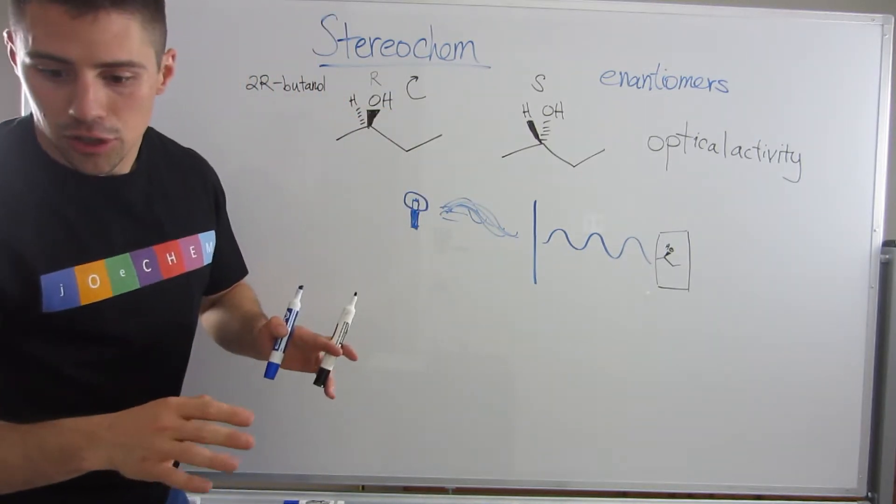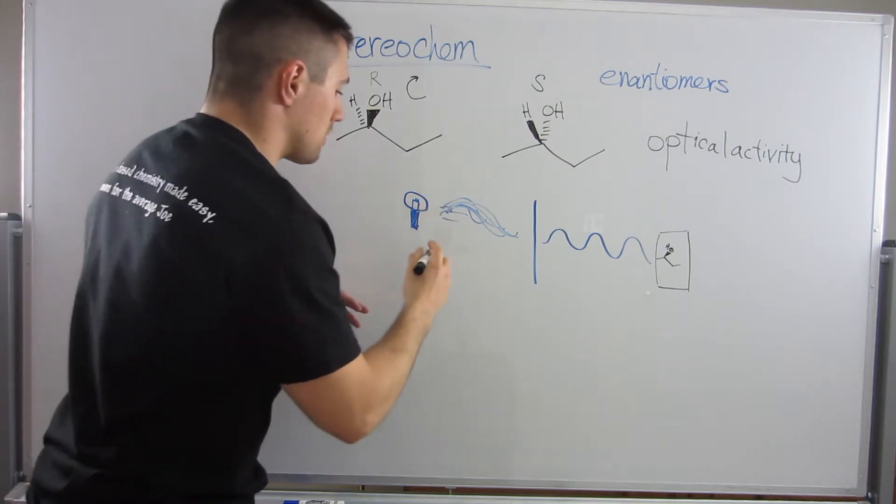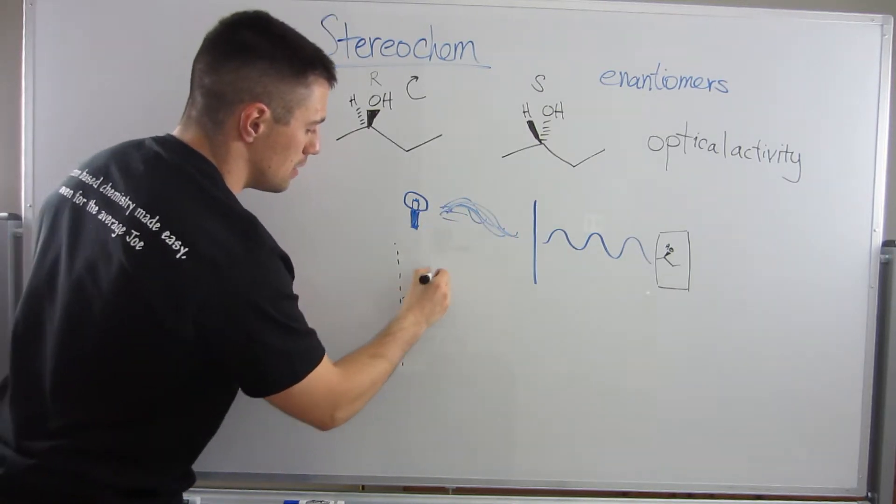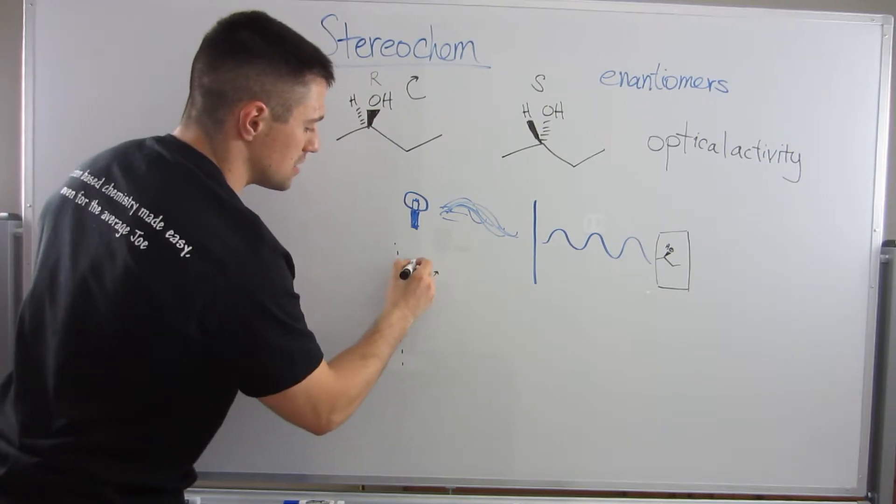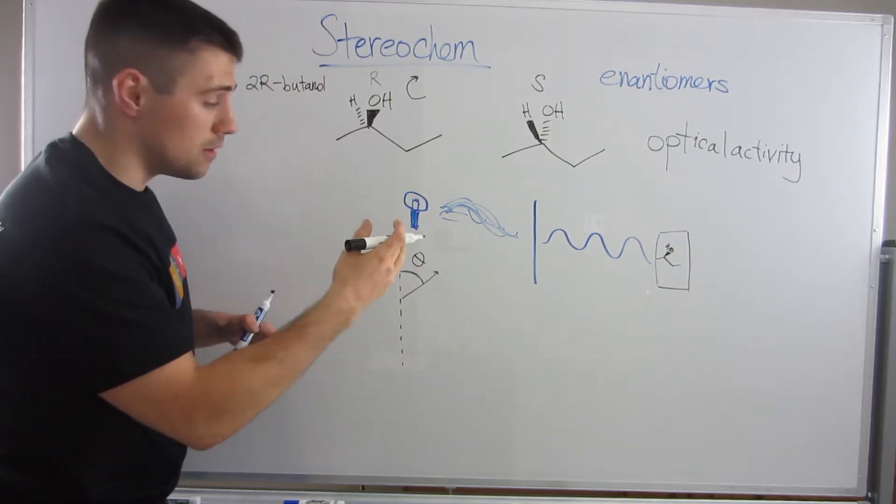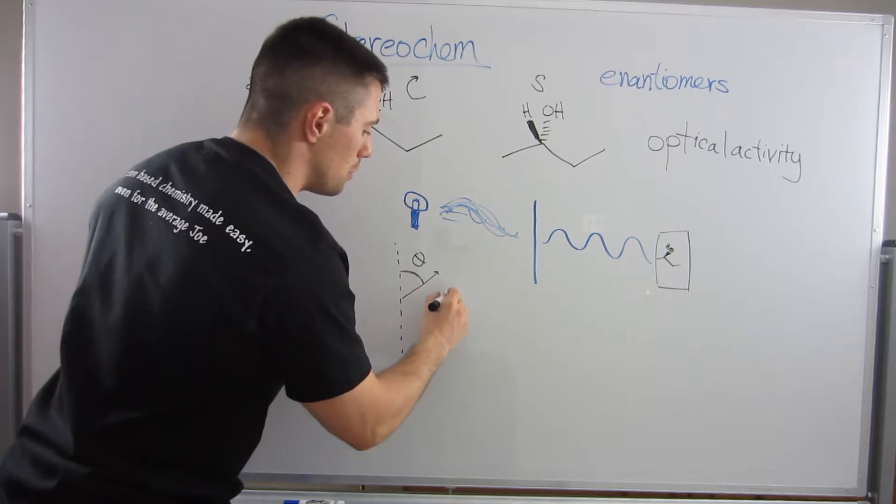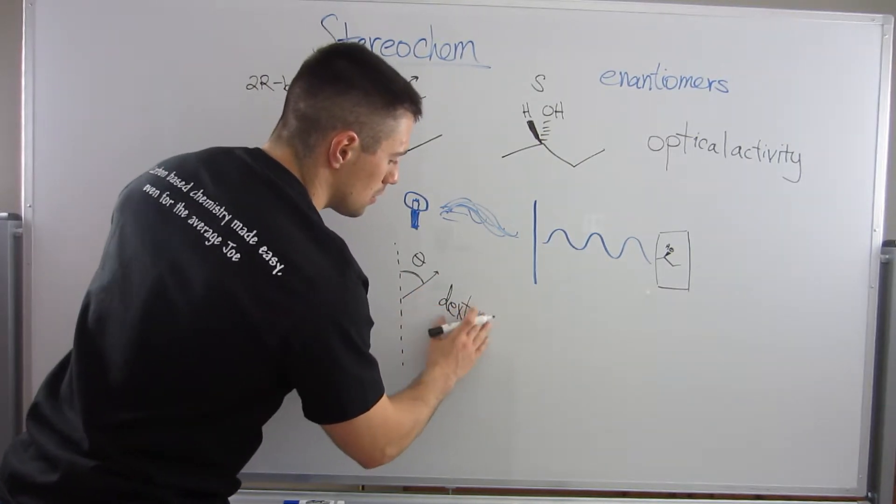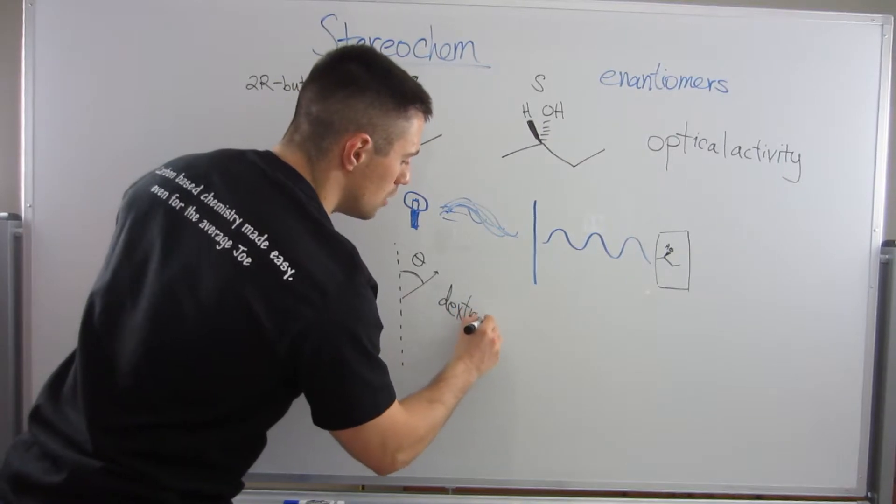And let me make sure I get these terms correct. So if let's say we had this dotted line and the light was bent, this distance right here, this angle theta, this would be, you could call that compound dextrorotary, which means it bends things to the right.